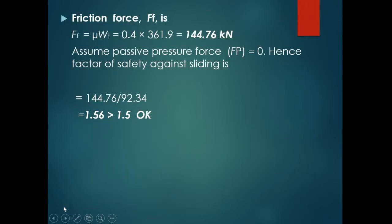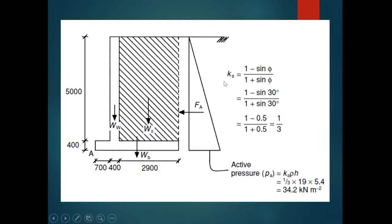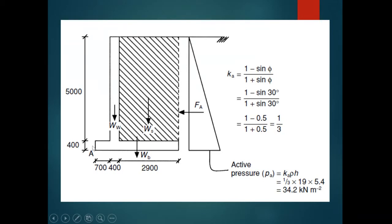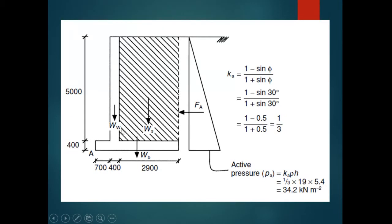We have active earth pressure acting on this retaining wall. The coefficient of active earth pressure Ka equals (1 − sin φ) / (1 + sin φ), where φ is the internal angle of friction. So Ka = 1/3. The active earth pressure Pa is equals to Ka × soil density × total height. The total height is 5 m plus 0.4 m, where 0.4 m is the assumed thickness of the base slab. We have initially assumed both base slab and stem thickness as 400 mm, giving Pa = 34.2 kN/m².